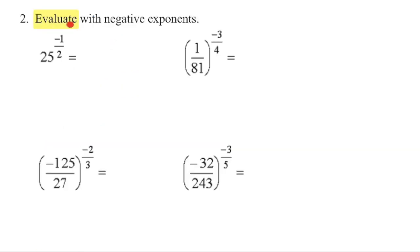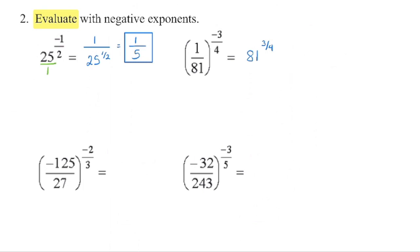We're now going to evaluate — get the value of each of these powers. We have 25 to the power of negative one-half. To eliminate the negative exponent, we reciprocate the base: 25 over one becomes one over 25, and we now have a positive exponent. Enter 25 to the power of one divided by two into your calculator and we get a value of five. Next, there's nothing to simplify inside the bracket, so we reciprocate the base and enter 81 to the power of three-quarters; we get a value of 27.